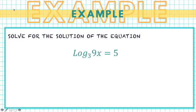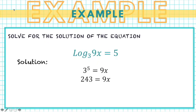For example, we have the equation: logarithm of 9x to the base 3 equals 5. To solve this, change the equation into its exponential form: 3 raised to 5 equals 9x. Simplifying, we get 243 equals 9x. Dividing both sides by 9, the value of x is 27.